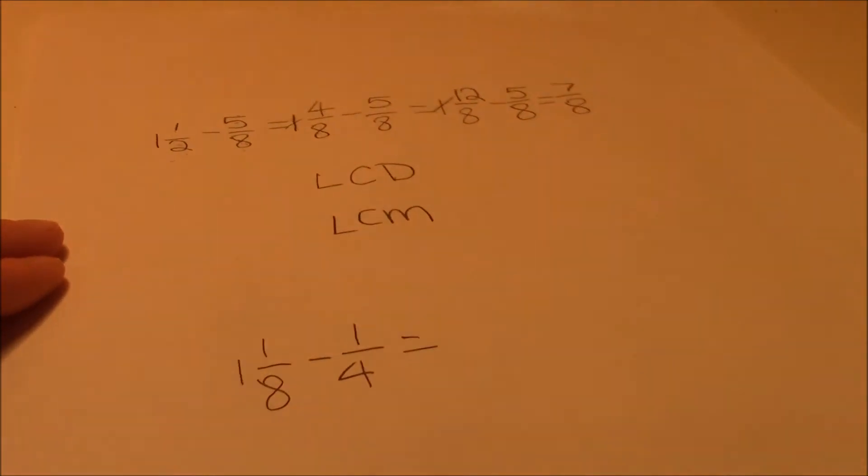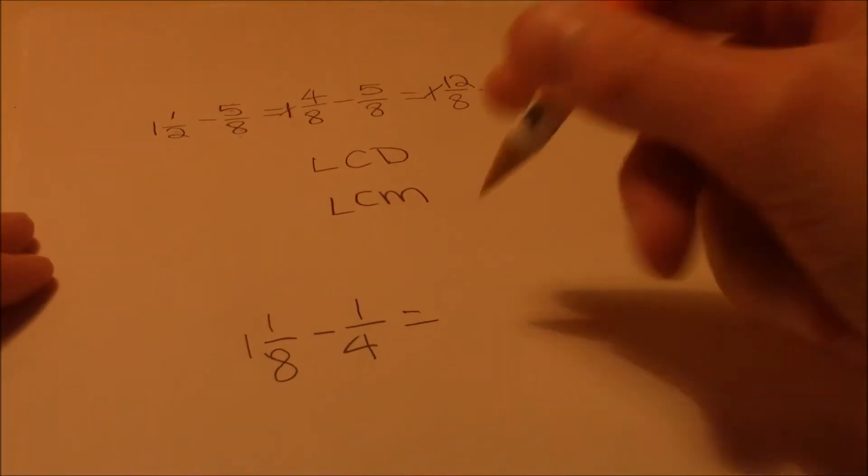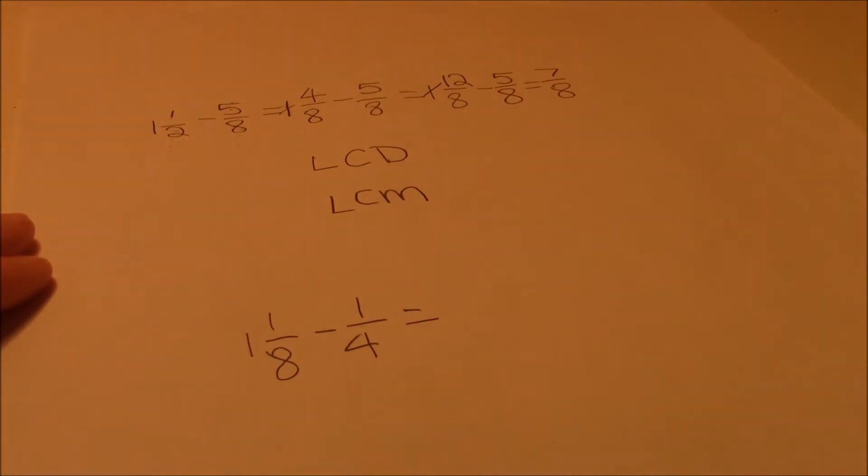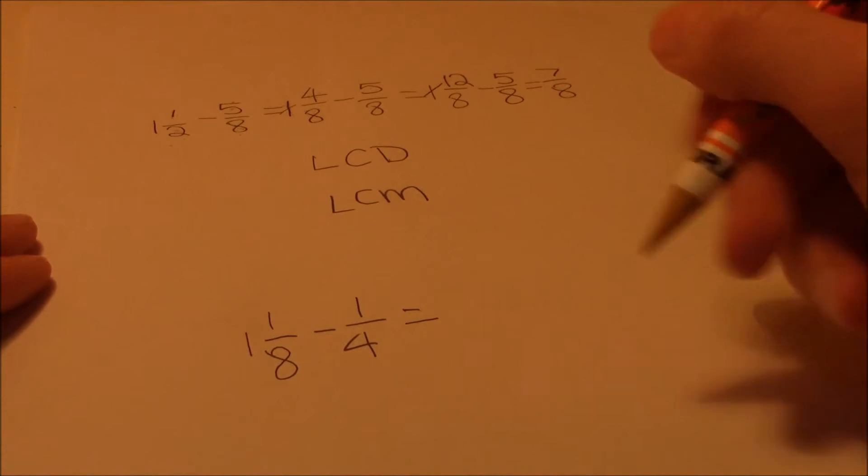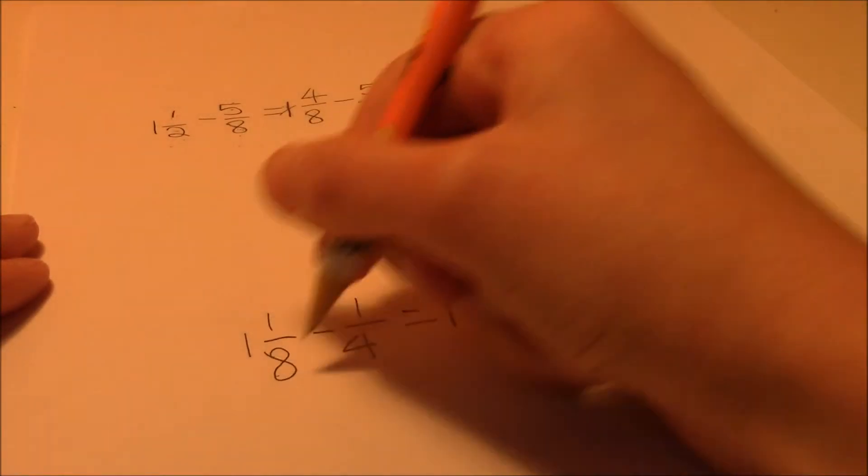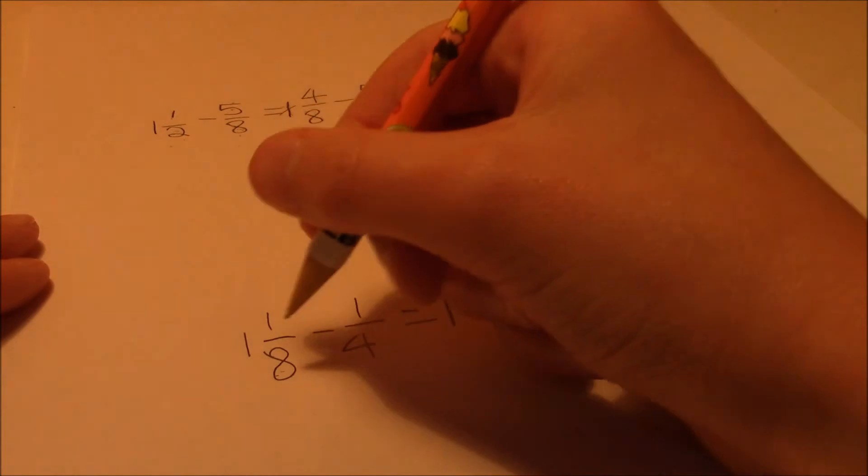And then, we do what we just did. So, if you'd like, you can follow along with this question, and we can see if we get the same answer. So, first thing, we find the lowest common multiple of these two numbers.